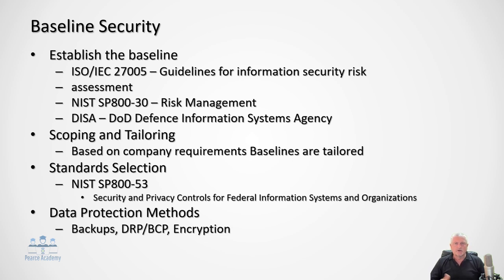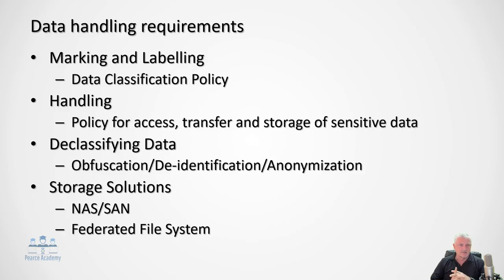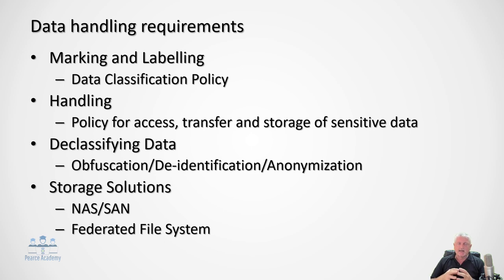Data protection methods include backups, DRP and BCP from operations security, and encryption from security engineering. For information and asset handling requirements, there must be marking and labeling — for example, data classification policies, common criteria from engineering, the Department of Defense rainbow series classifications, and policies for handling critical or secret data including booking in/out and maintaining access logs. There must also be policies covering transfer and storage of sensitive data. For declassifying data, methods include obfuscation, de-identification, and anonymization — removing all identifiable information from a document, such as all client references.